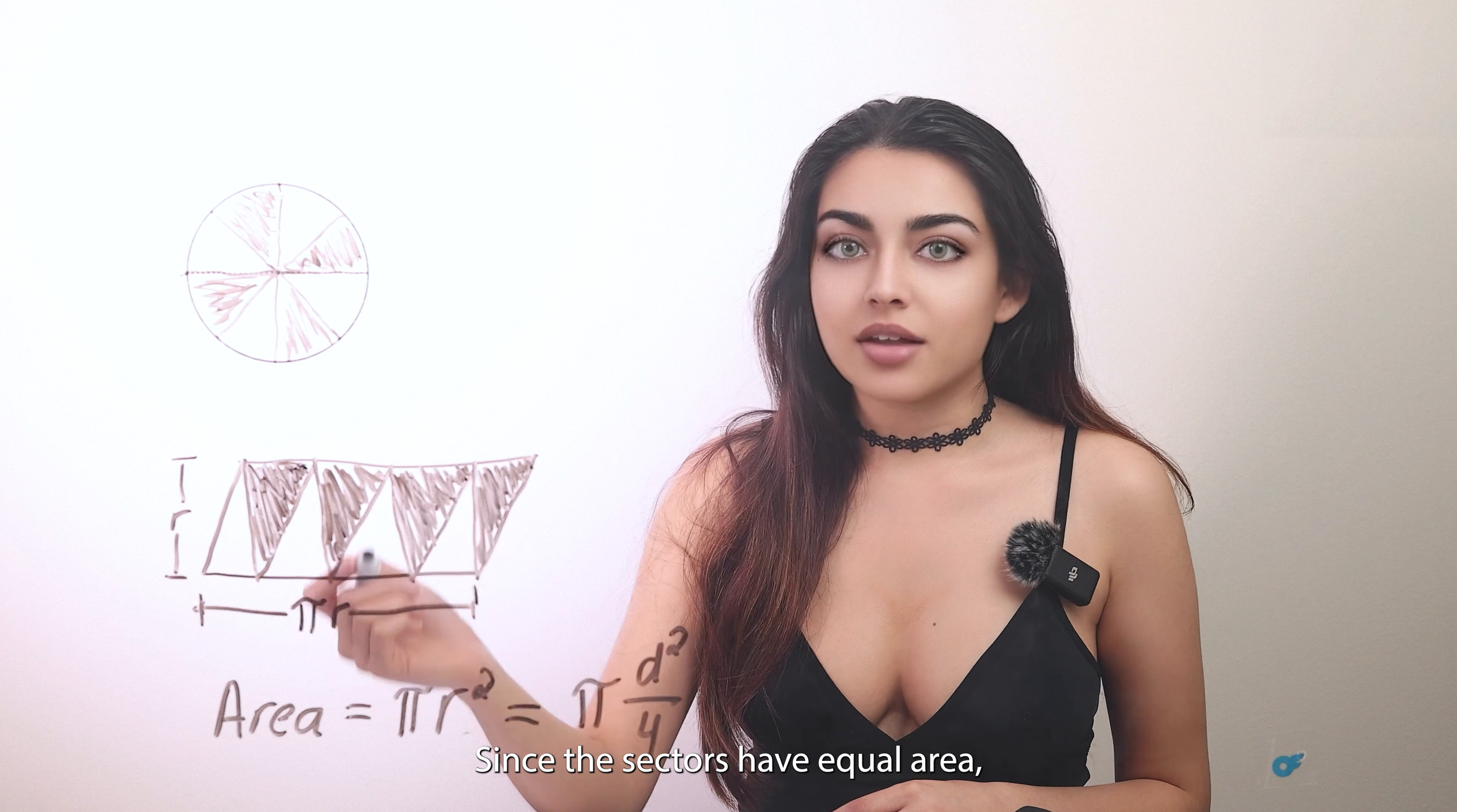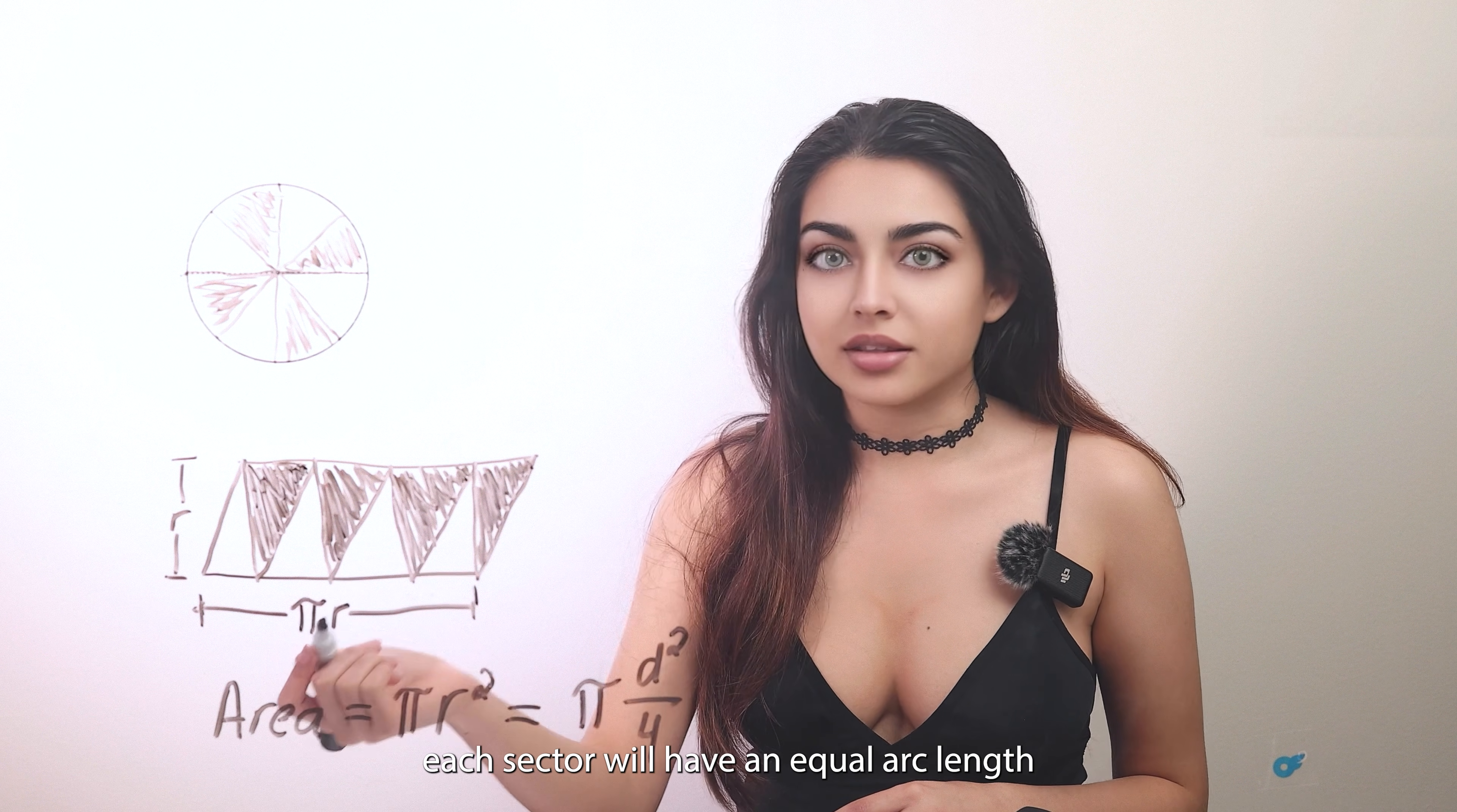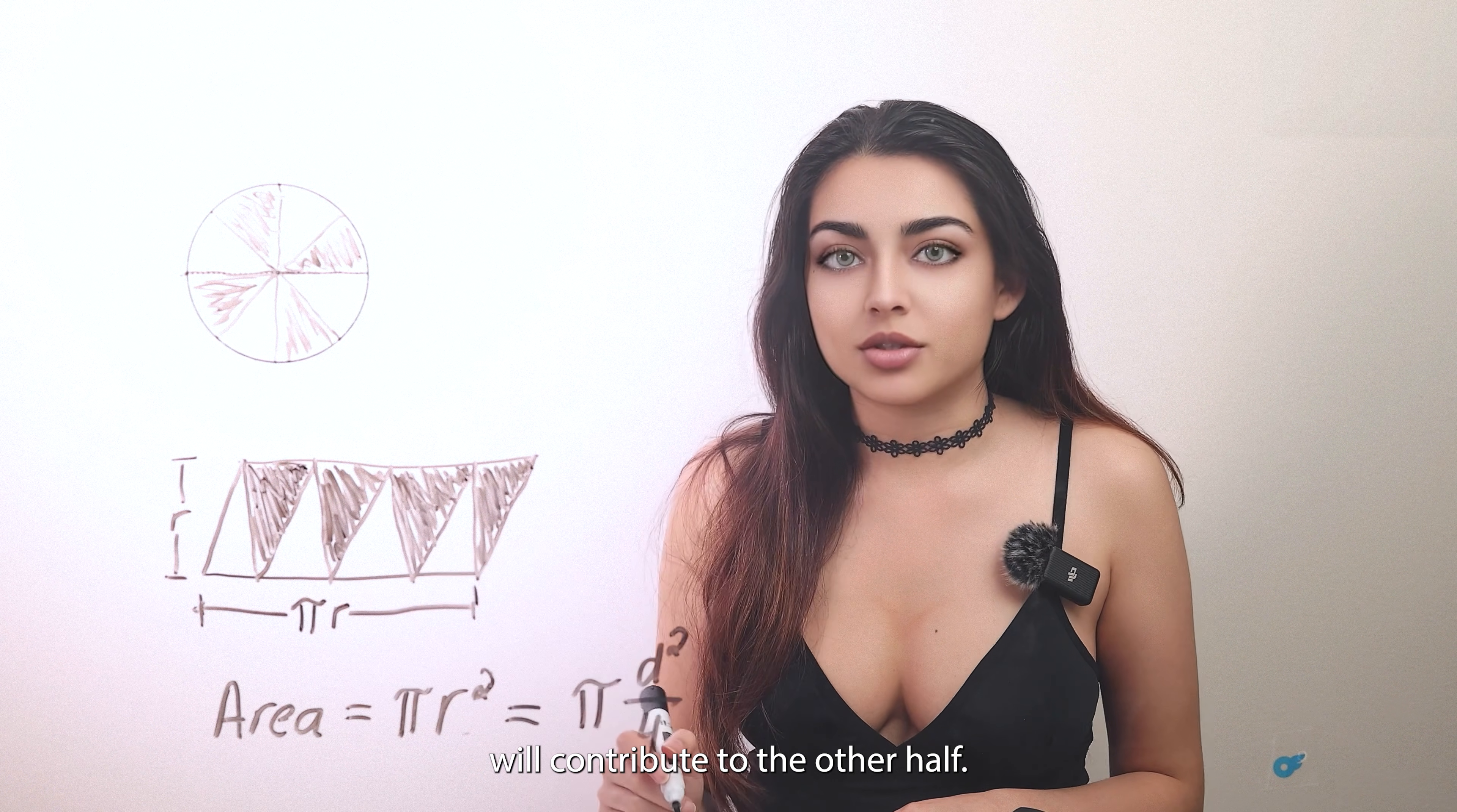Since the sectors have equal area, each sector will have an equal arc length as well. The shaded sectors will contribute to half of the circumference and the unshaded sectors will contribute to the other half.